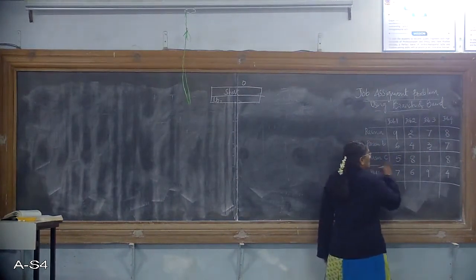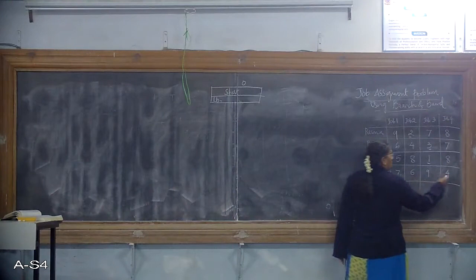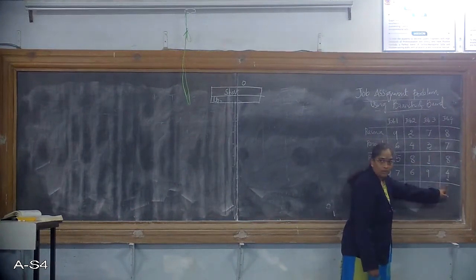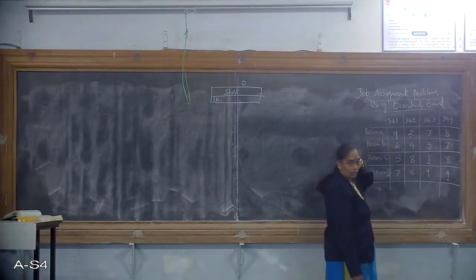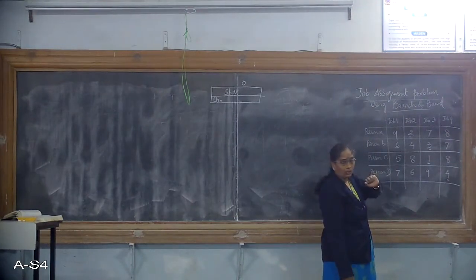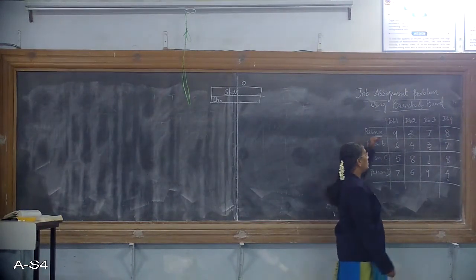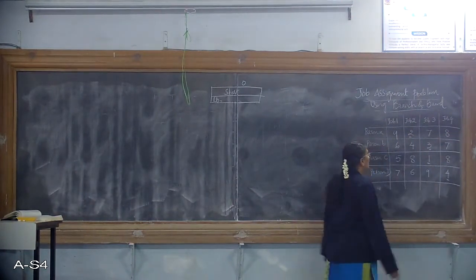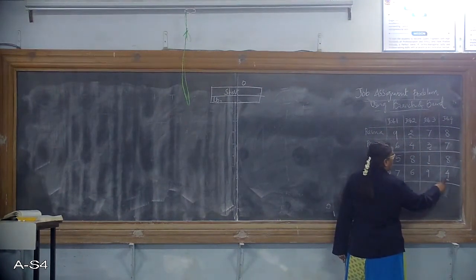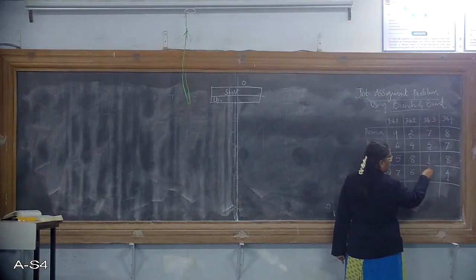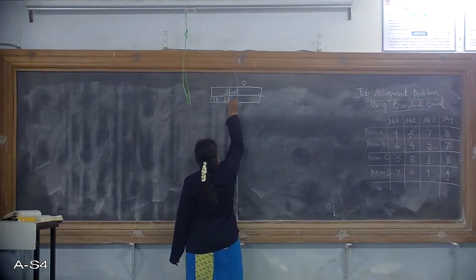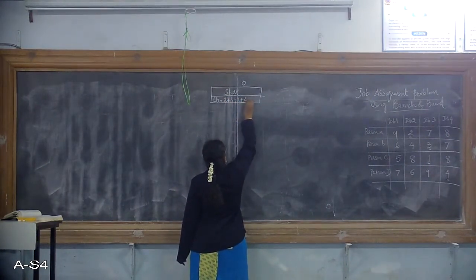Tracing the remaining rows: the values for the third and fourth rows give us 1 and 4. The lower bound value is the sum of the smallest elements from each row: 2 plus 3 plus 1 plus 4, which equals 10. So LB equals 10 for node number zero.